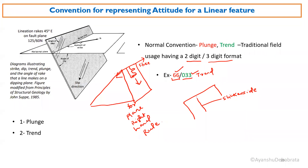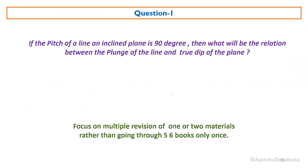Now a question: if the pitch of a line on an inclined plane is 90 degrees, what will be the relation between the plunge of the line and the true dip of the plane? Suppose this is a plane with a lineation, making 90 degrees with the strike — that is, pitch is 90 degrees. What will be the relation between the plunge of the line and the true dip of the plane?